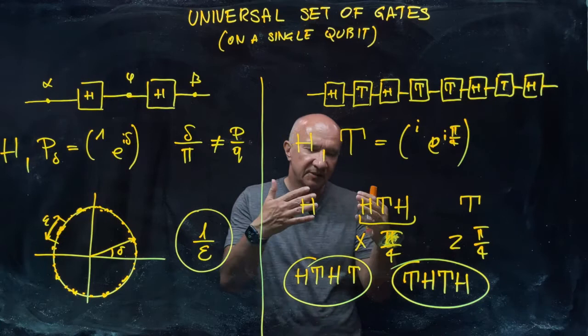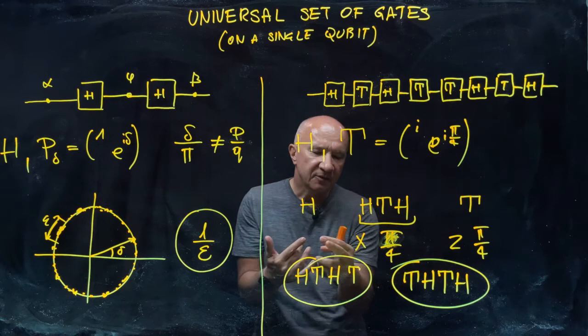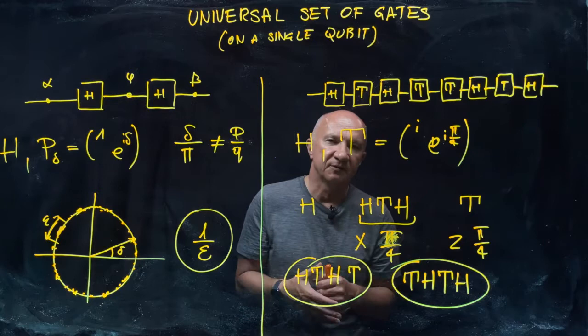Then you have, in terms of the Bloch sphere, you have rotations about two axes which are pointing slightly different directions. And each rotation is by an angle which is an irrational multiple of pi.